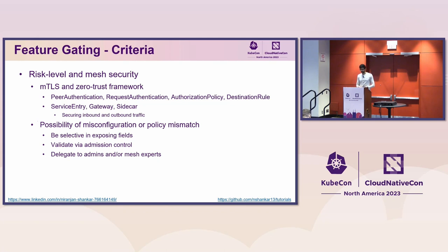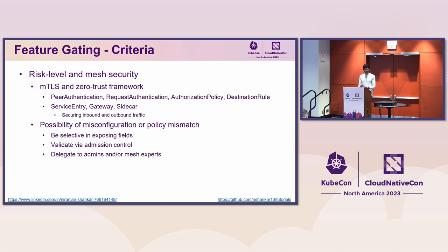It's also crucial to factor in the risk level and impact on overall mesh security. Because security like mTLS and Zero Trust are core reasons why organizations adopt a service mesh in the first place, the resources and APIs that govern security should be handled carefully. We've already touched on peer authentication and mTLS, but there are other Istio resources pertaining to security as well. To prevent policy misconfigurations and mismatches, it would be worthwhile to add fine-grained validations for these resources, hide some configuration using an abstraction, or delegate their configuration to admins or experts altogether.